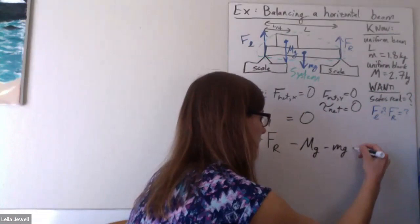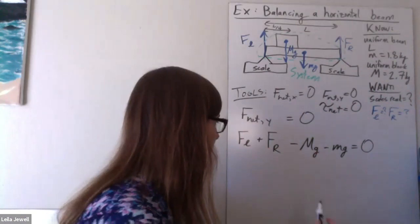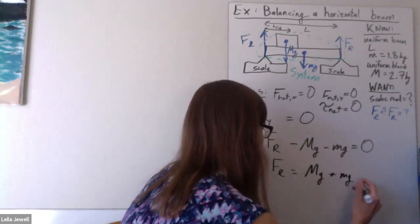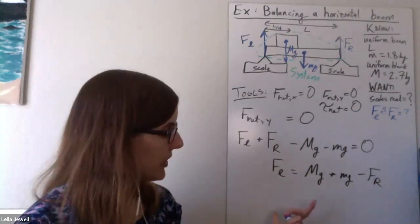And so this gives me one relationship. That I can find any of them in terms of these two unknown forces. So the force on the left is going to be the total weight and big mg plus little mg minus however much the right side is supporting it. So that's a great start.